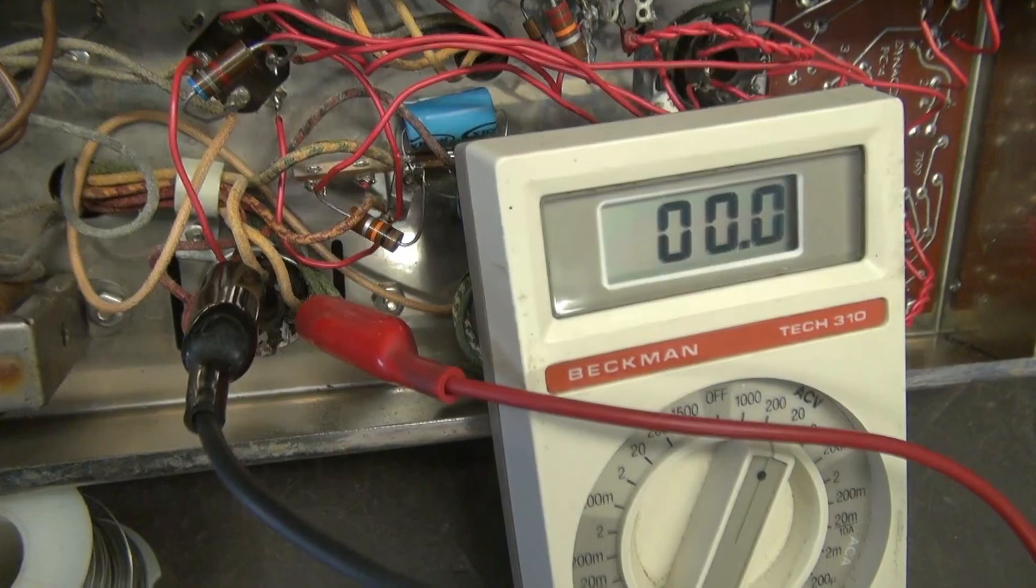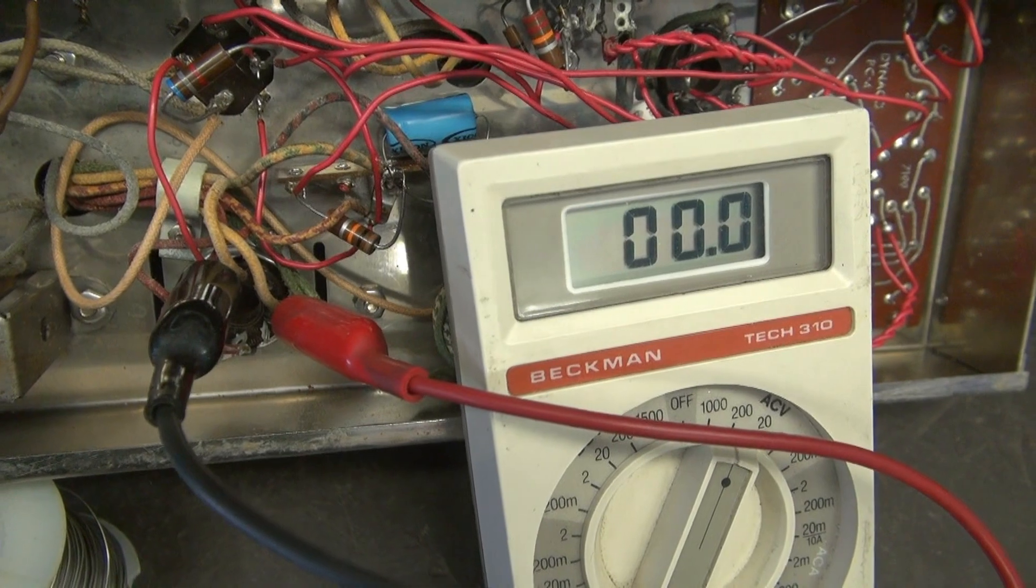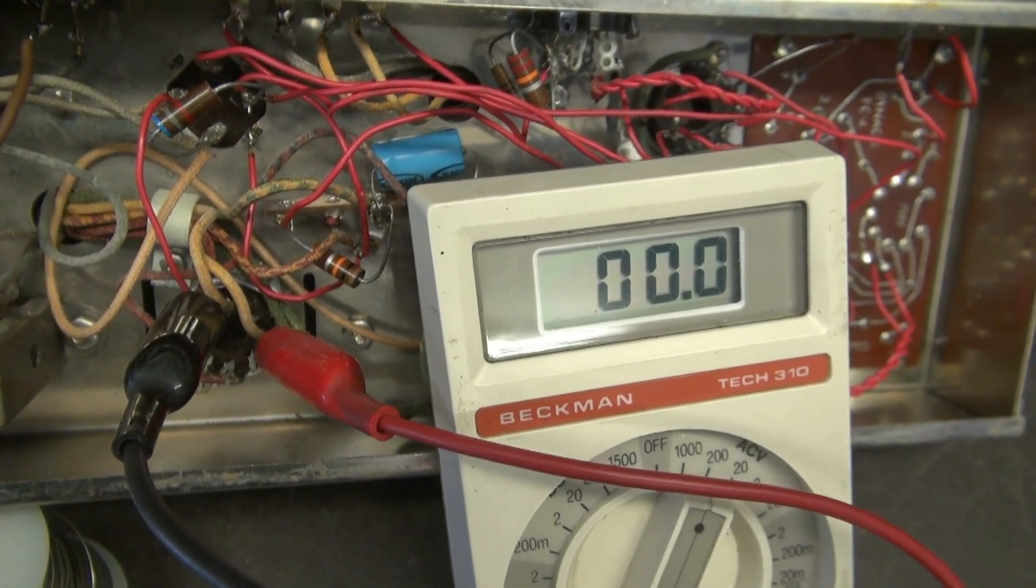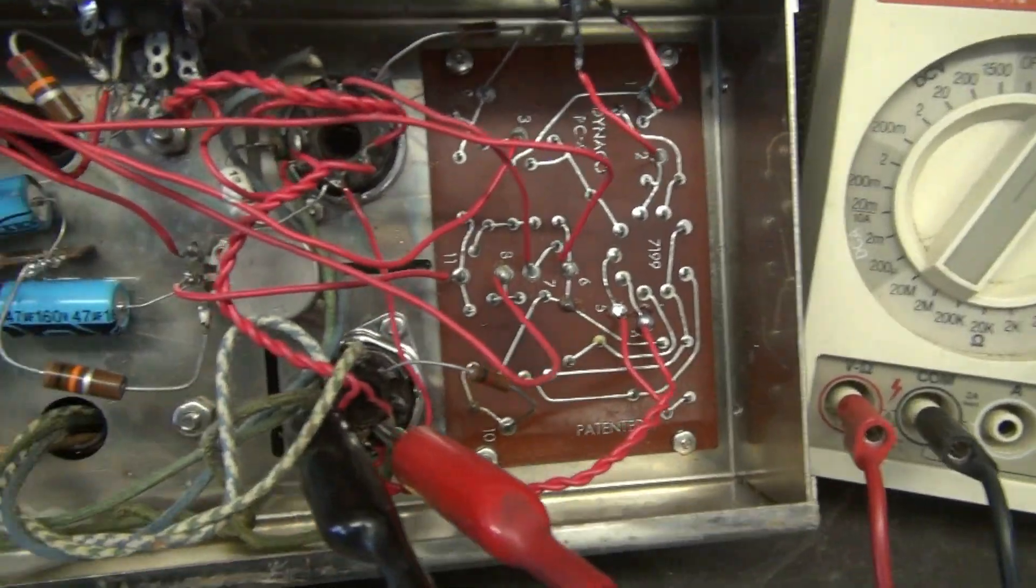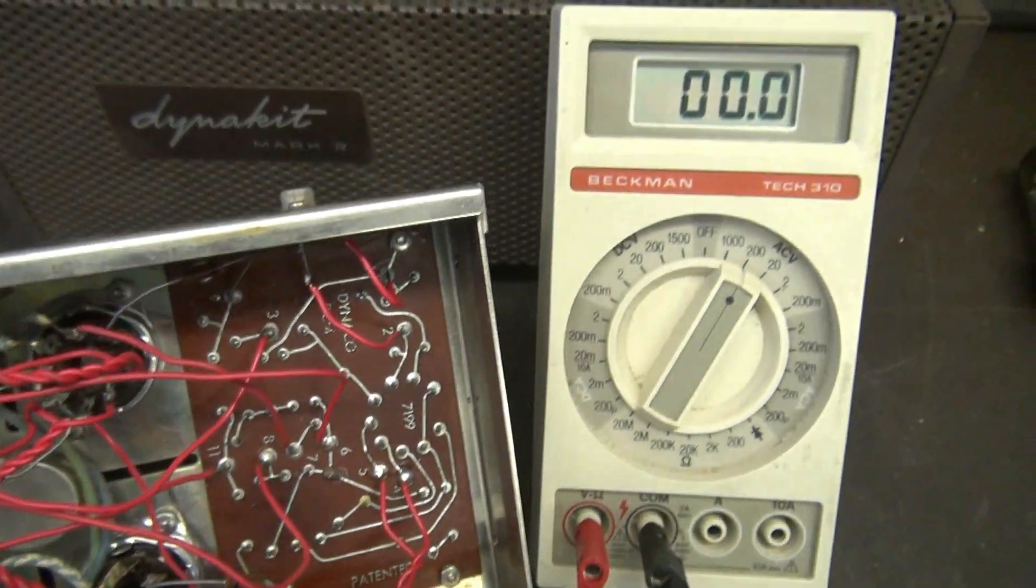Let's check the filaments. Same thing. Here's the five volt line, which goes to the rectifier tube. You can see that's alive. Now let's check the six volt filament line.